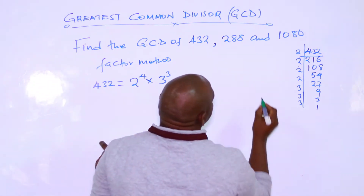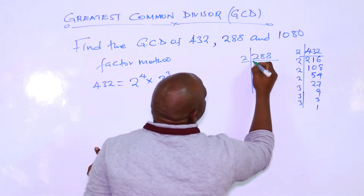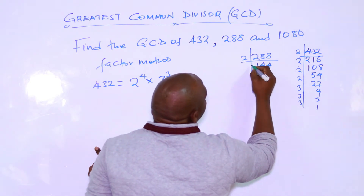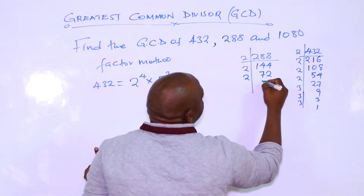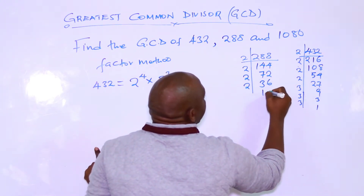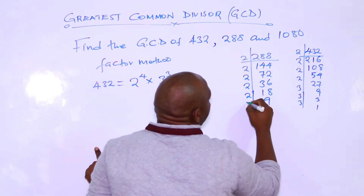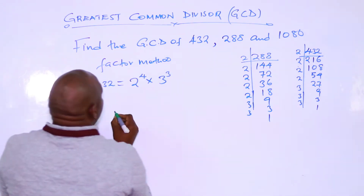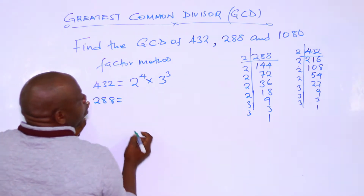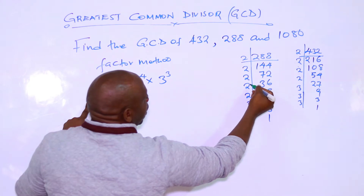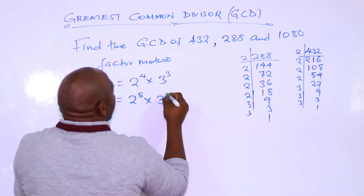Factors of 288: by 2: 144, by 2: 72, by 2: 36, by 2: 18, by 2: 9, by 3: 3, by 3: 1. So 288 equals 2 to the power 5 times 3 to the power 2.